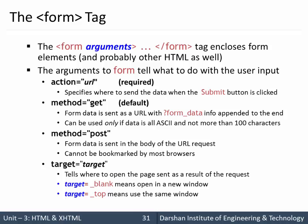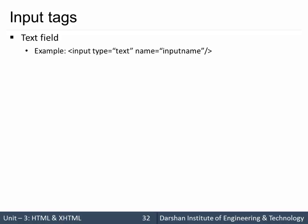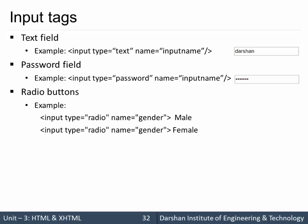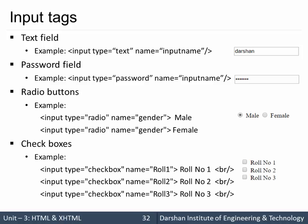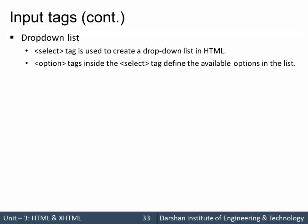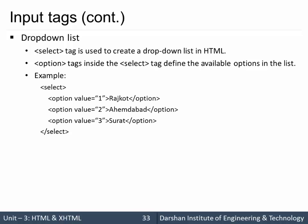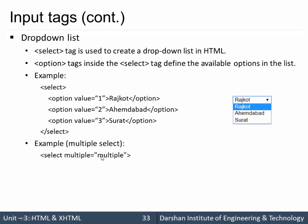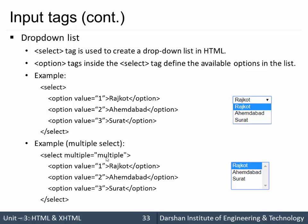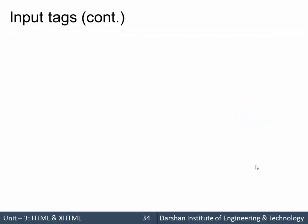There is also a target attribute which specifies where you want the output to be displayed. Input tags we have seen include input type equal to text, password, radio, and checkboxes. We also saw select, inside which we specify options. We can choose multiple options by specifying 'select multiple equal to multiple'. So the output allows us to select multiple from the options. These five elements were covered in the last session.